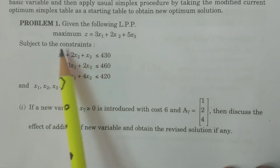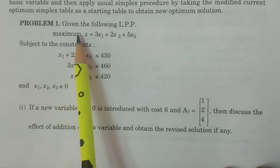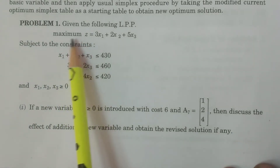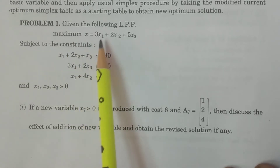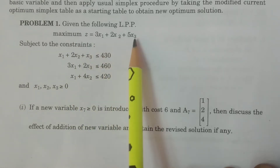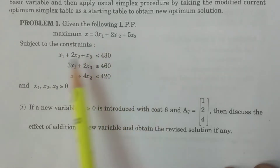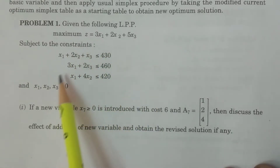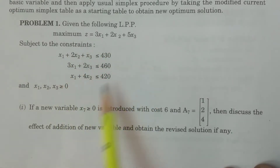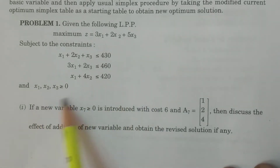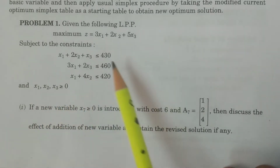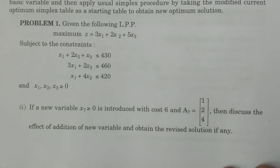Here is the given problem. Maximize z = 3x1 + 2x2 + 5x3, subject to the given constraints, and x1, x2, x3 greater than or equal to 0.